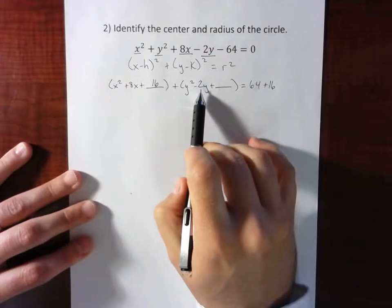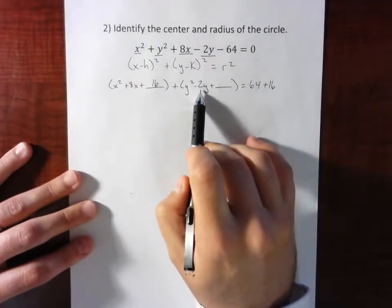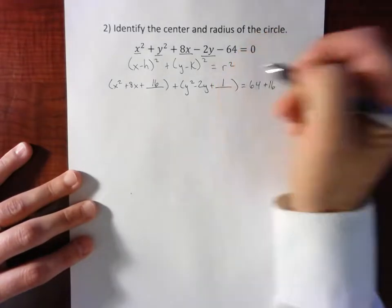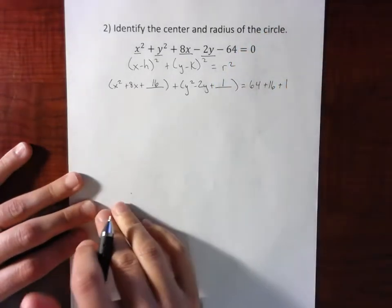Now let's do it for the y as well. So half of 2 is 1. Squared is still a 1. So we're just going to add 1. Again, we add it to both sides.